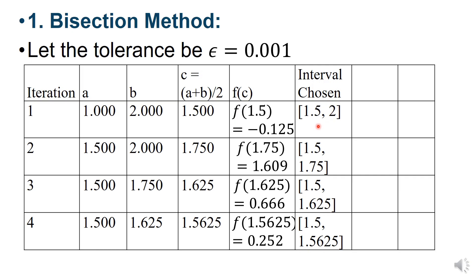We start iteration 2. a = 1.5, b = 2. Same process as step 1: add both values then divide by 2, we get c = 1.75. Putting 1.75 in the function, we get 1.609. New interval: a = 1.5, b = 1.75.